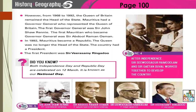From 1968 to 1992, the Queen of Britain remained the head of state. Mauritius had a governor general who represented the Queen of Britain. The first governor general was Sir John Shaw Rainey. The first Mauritian who became governor general was Sir Abdul Rahman Osman. You will have to know this — who was the first Mauritian governor general? He was Sir Abdul Rahman Osman.